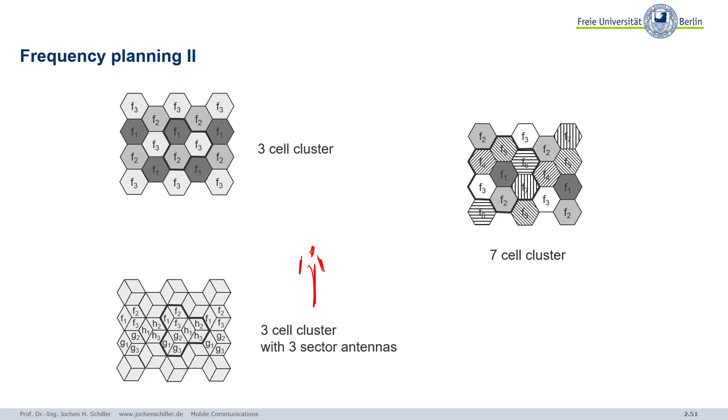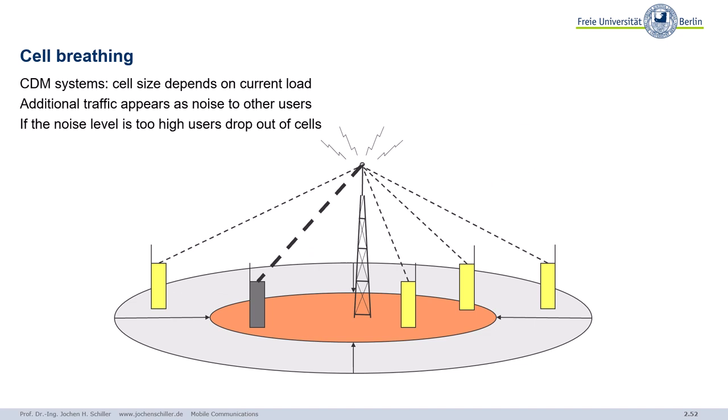For third-generation mobile phone systems, frequency planning is no longer needed in the same way because they use code division multiplexing — all users use the same spectrum at the same time. However, third-generation systems like UMTS suffer from a different problem called cell breathing. In FDM/TDM schemes, a certain part of the spectrum at a certain time is assigned exclusively to a certain user.